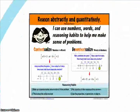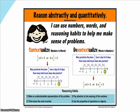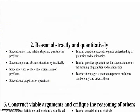Number two: reason abstractly and quantitatively. Mathematically proficient students make sense of quantities and their relationships in problem situations. They bring two complementary abilities to bear on problems involving quantitative relationships: the ability to decontextualize — to abstract a given situation and represent it symbolically and manipulate the representing symbols as if they have a life of their own without necessarily attending to the referent — and the ability to contextualize, to pause as needed during the manipulation process in order to probe into the referent for the symbols involved. Quantitative reasoning entails habits of creating a coherent representation of the problem at hand, considering the units involved, attending to the meaning of quantities, not just how to compute them, and knowing and flexibly using different properties of operations and objects.